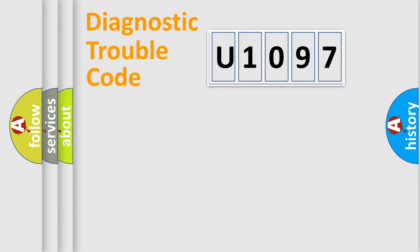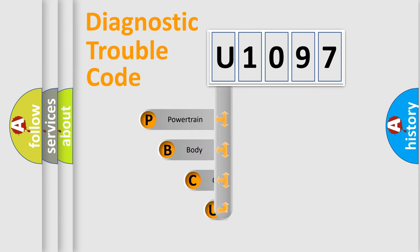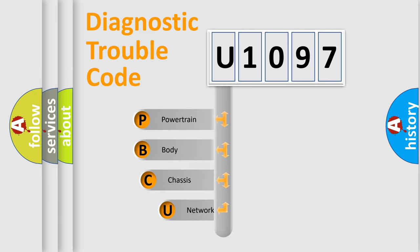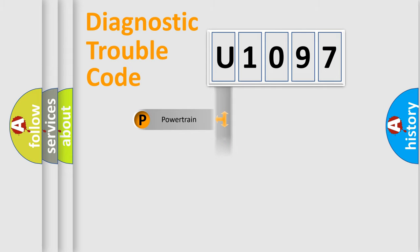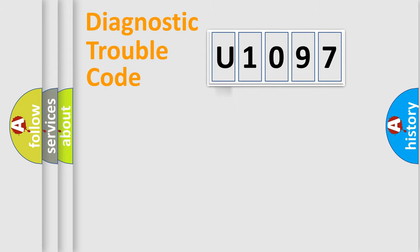Let's look at the history of diagnostic fault code composition according to the OBD2 protocol, which is unified for all automakers since 2000. We divide the electric system of an automobile into four basic units: Powertrain, Body, Chassis, and Network.